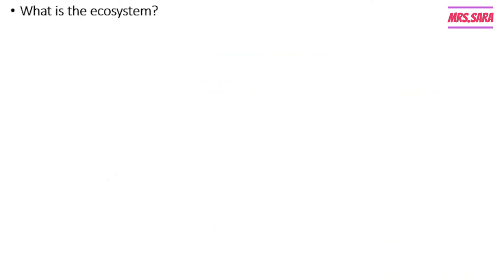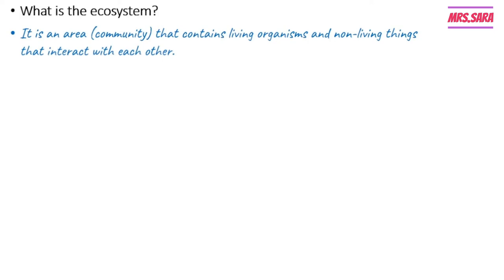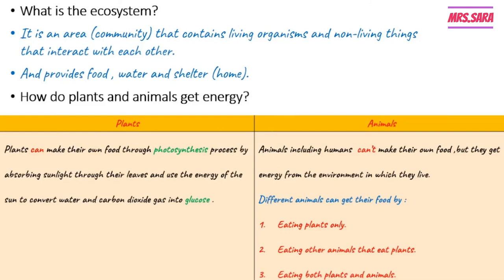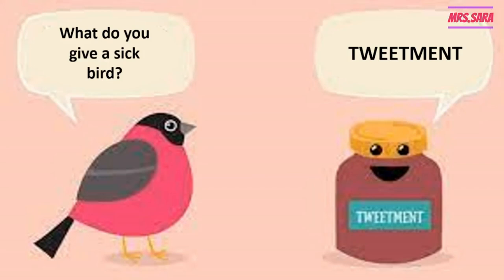So what is the ecosystem? The ecosystem is an area or community that contains living organisms and non-living things that interact with each other and provides food, water, and shelter. Plants make their own food through photosynthesis, absorbing sunlight through their leaves and converting water and carbon dioxide into glucose. Animals get food by eating plants only, eating animals that eat plants, or eating both plants and animals. That was our lesson for today — don't forget to like, subscribe, and share. Goodbye!